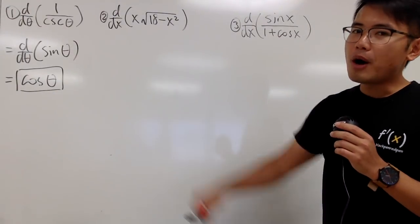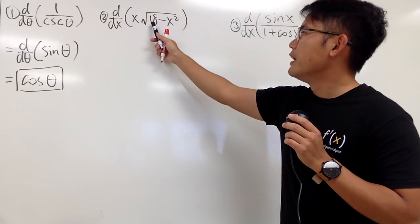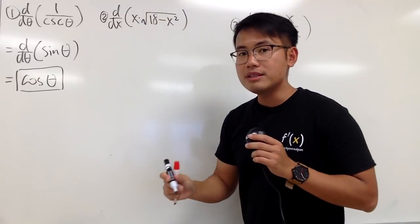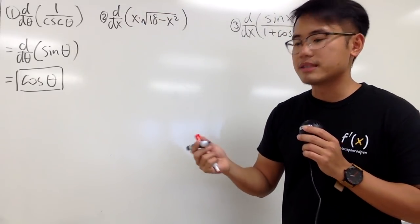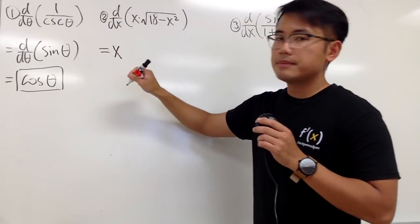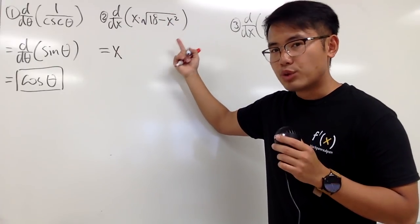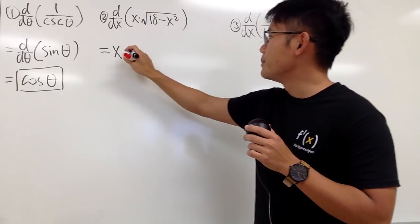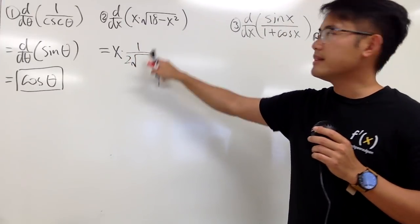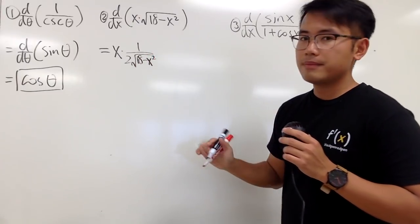And let's go for the next example. Here we are going to differentiate x times the square root of 18 minus x squared. Notice, this is a product of two functions. So, we have to use the product rule. And let's get going. I will keep the first function, which is x. And then, I will multiply by the derivative of the second. Derivative of the square root is going to be 1 over 2 square root. And then the inside stays the same, which is 18 minus x squared.